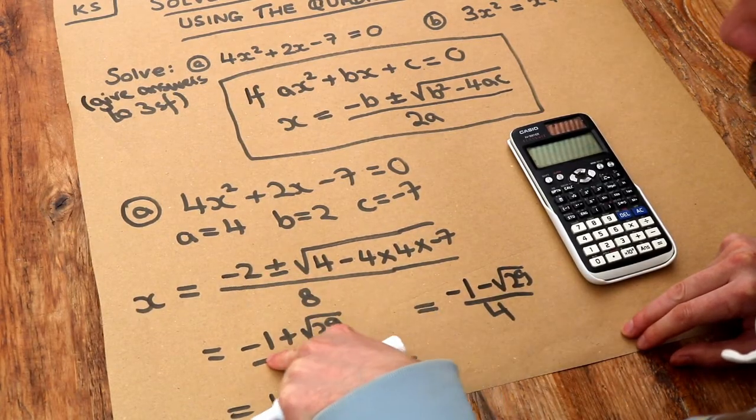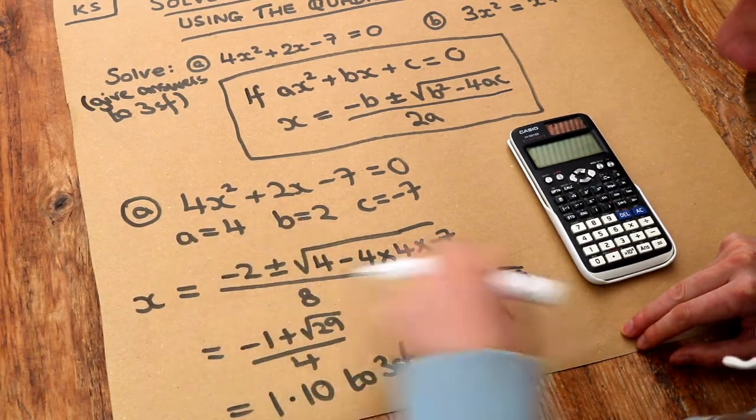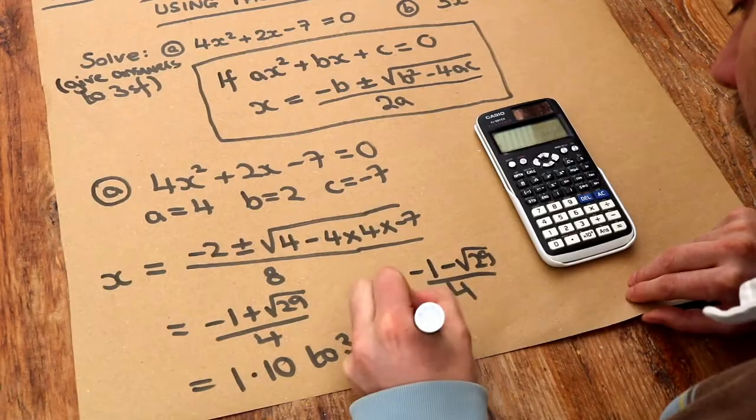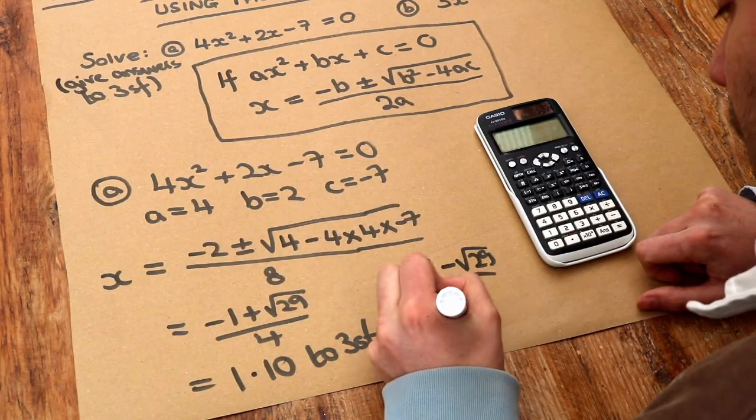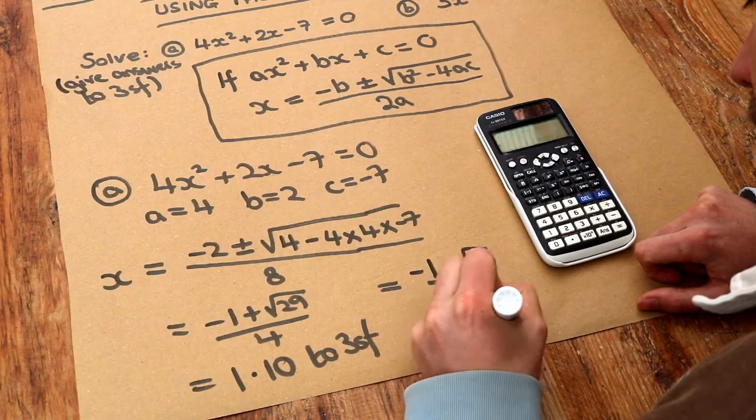By the way this minus 2 turned into minus 1 because that 8 turned into 4. Both the top and the bottom of this fraction were divided by 2. And again if you press the SD key you get minus 1.60 to three significant figures.